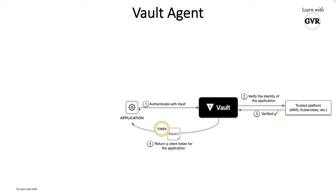Let's say you have an application that wants to connect and read some secret. Usually, that application will connect to Vault using some authentication method, Vault will verify via GitHub, AWS, Kubernetes, or anything, issue a token, and with that token the application will read the secret. But what if you have a thousand applications? That's where Vault Agent comes into the picture.